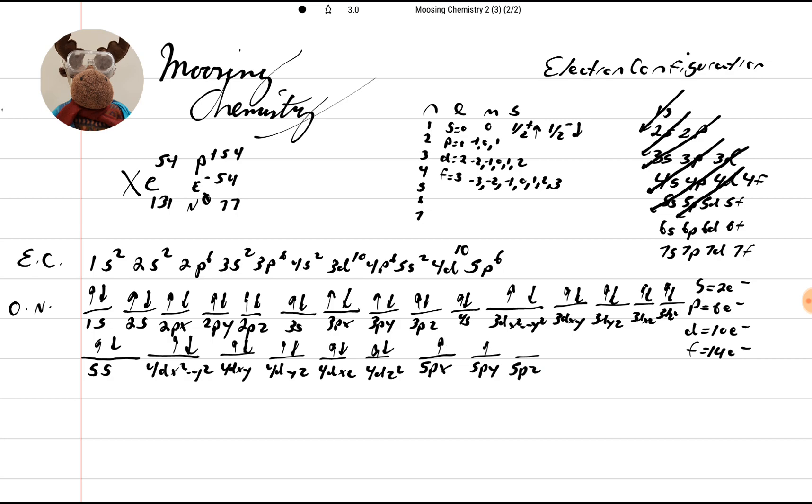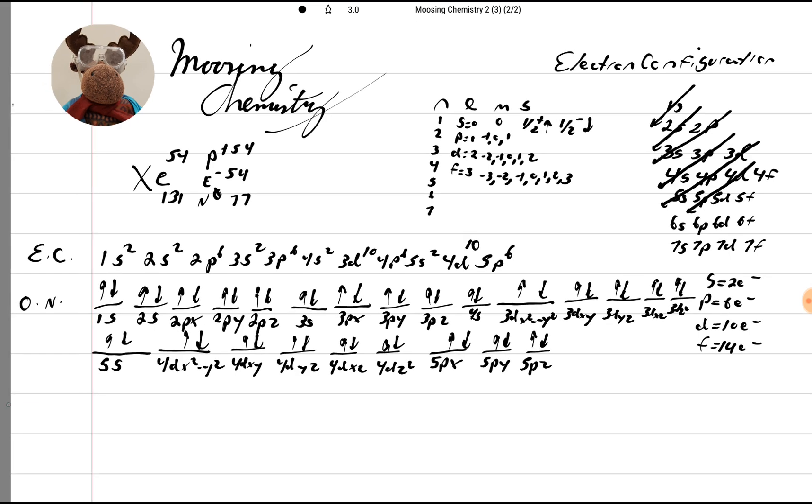1, 2, 3, 4, 5, and 6. So that's our orbital notation.